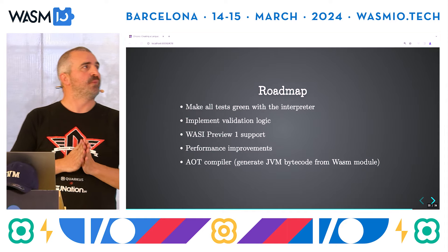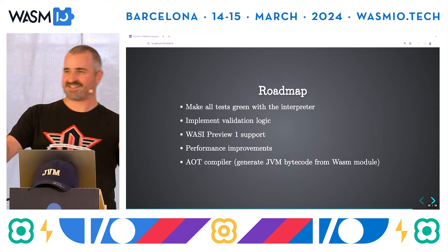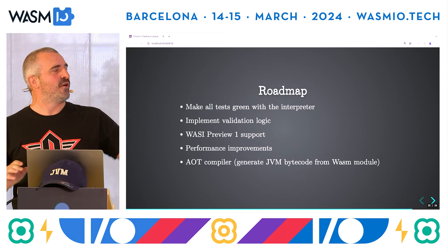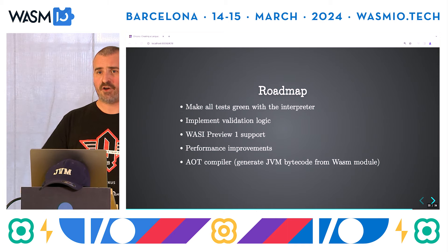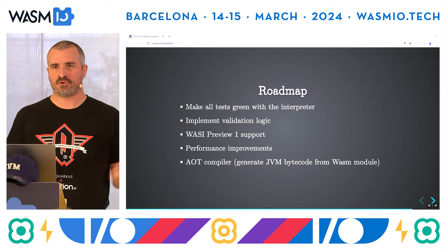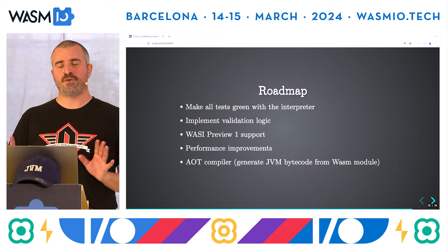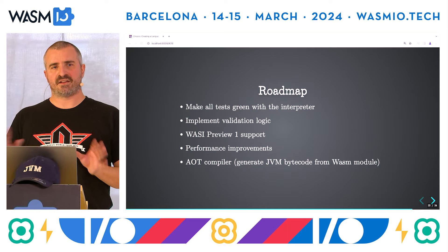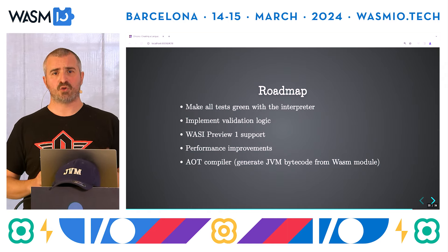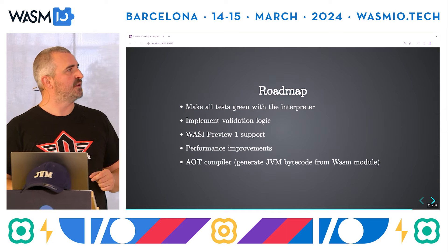Last but not least, I want to talk about our roadmap. It's just six months — the project is still really early and it's a lot of fun to join and contribute to. First, we want to make all the tests green with the interpreter for the test suite. For now we have excluded SIMD support because we don't have capacity for tackling it and it will require Java 21 with the Vector API. But we are already more than 90% of the tests passing, so there are just a few bits to fix.